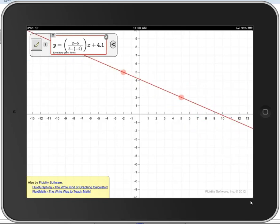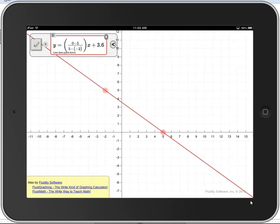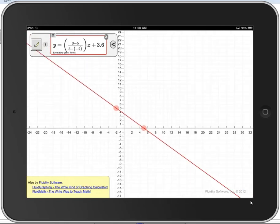I can click on these red dots, which are control points, and change the points that the line passes through. If I click on the background, I can move the graph around to get a better view. If I use two fingers, I can zoom in and out.